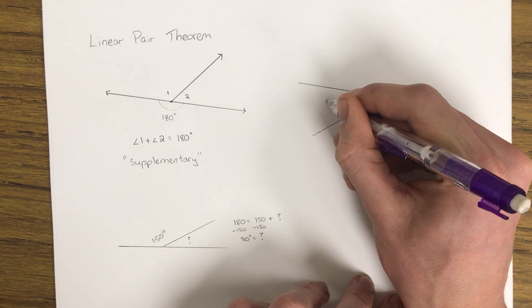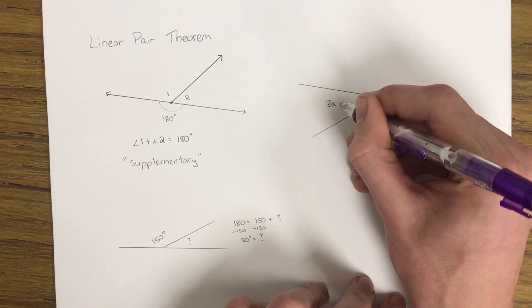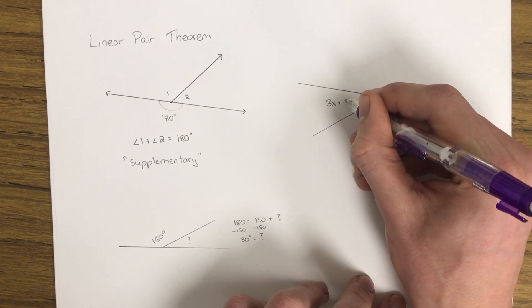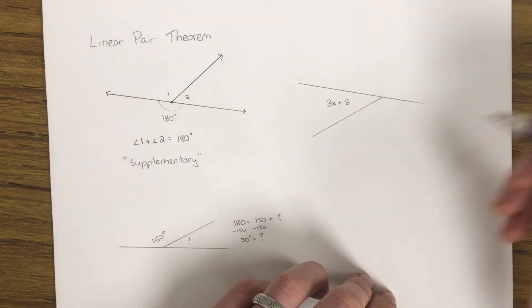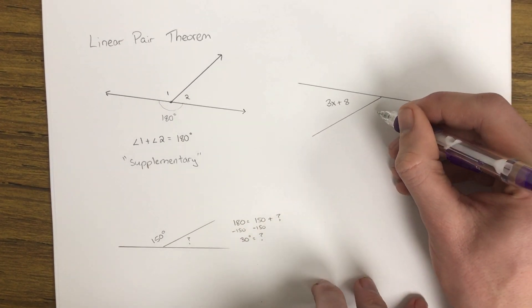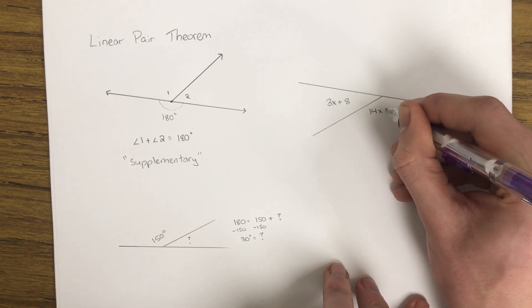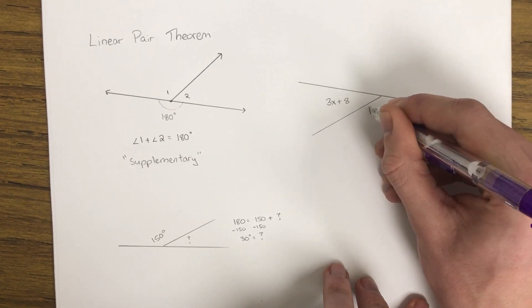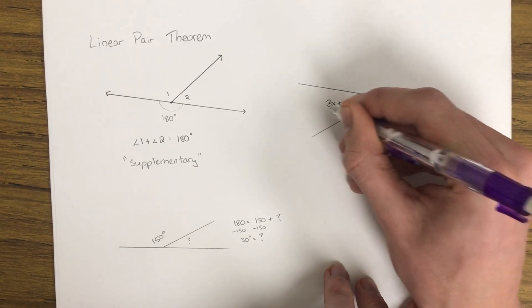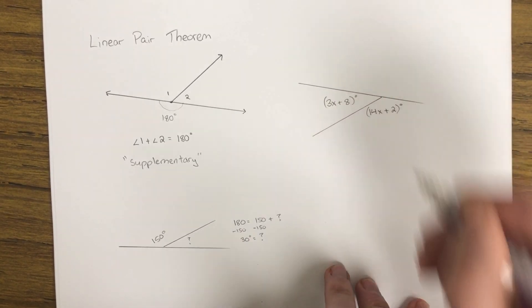Let's say this one is 3x plus 8, and this one is going to be 14x plus 2. So that is the whole angle as an algebraic expression.